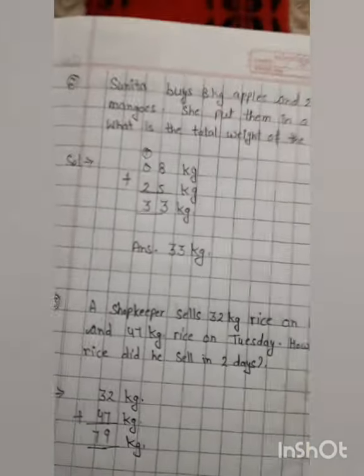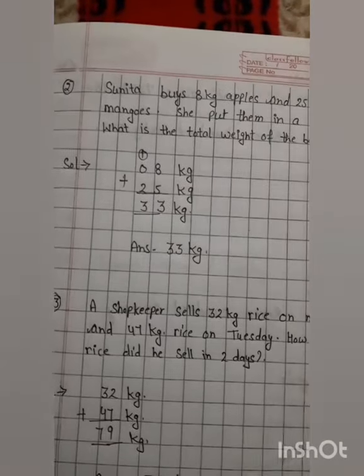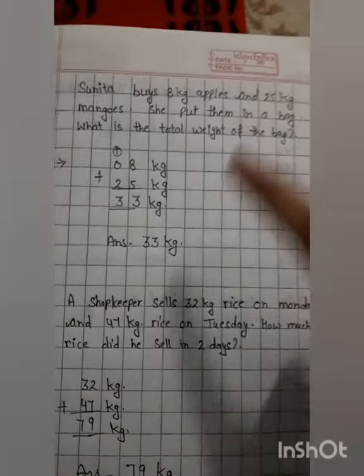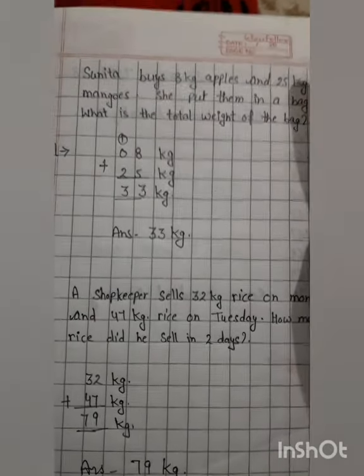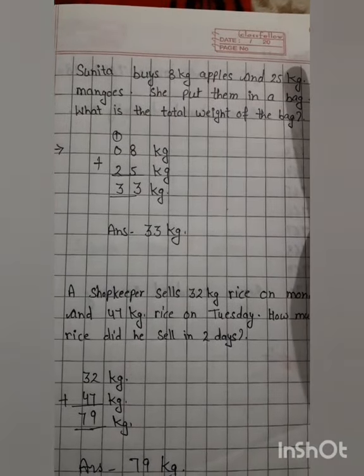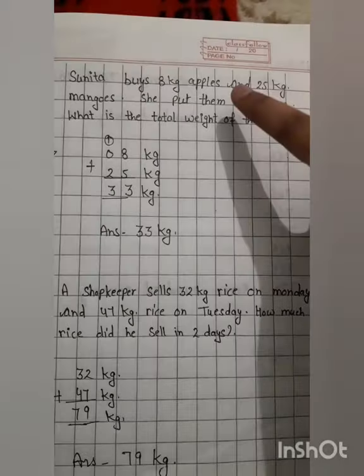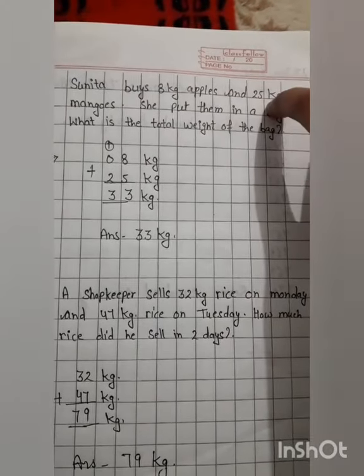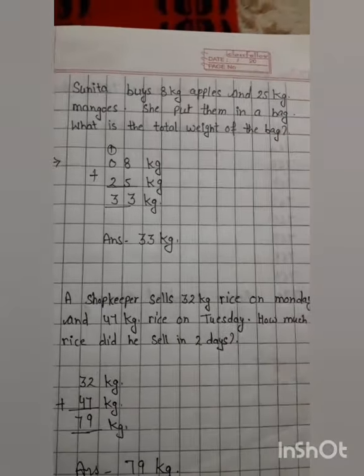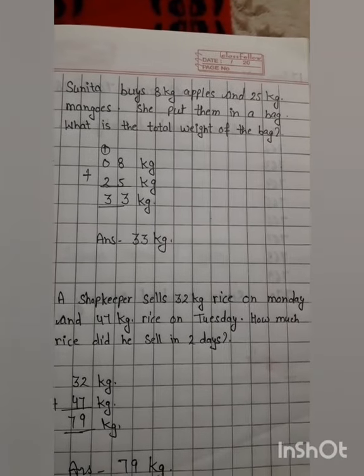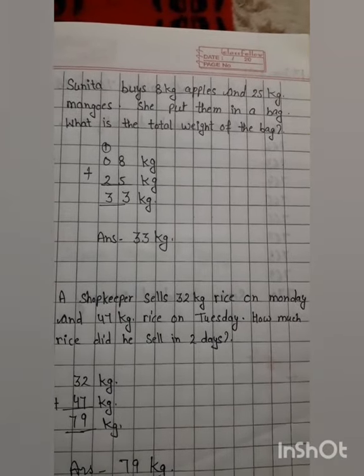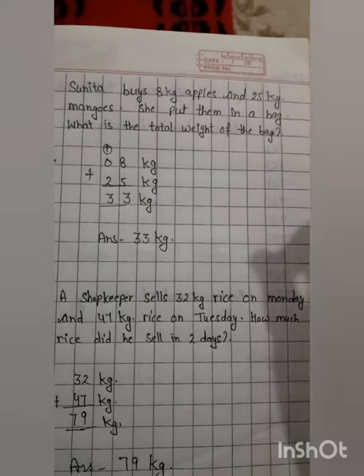Sunita buys 8 kg apples and 25 kg mangoes. She puts them in a bag. What is the total weight of the bag? Sunita bought 8 kg apples and 25 kg mangoes. After that, she put them in a bag. We have to find out what the total weight of the bag will be.